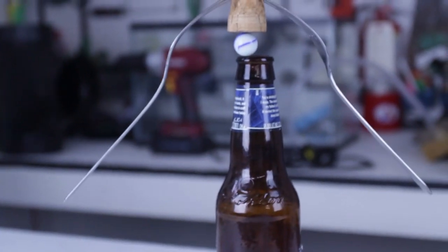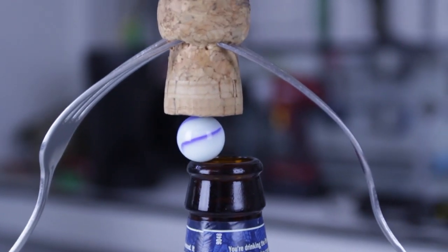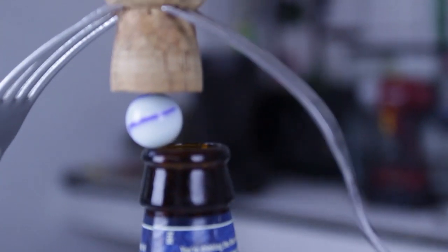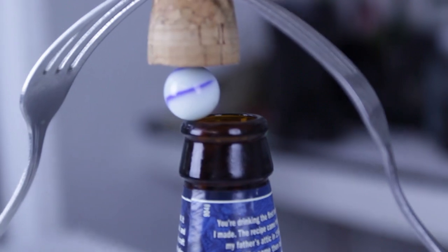Also what you can do, balance these two forks on the edge of the bottle with a little marble right on top of it, of the bottle. Pretty incredible, what do you guys think? Thumbs up for this one.